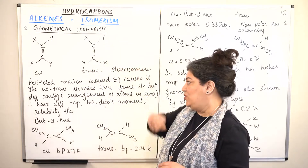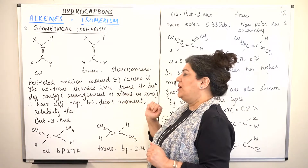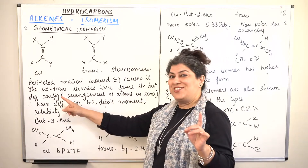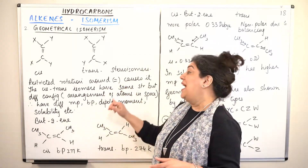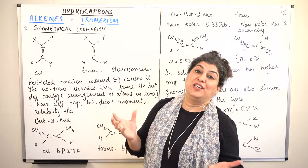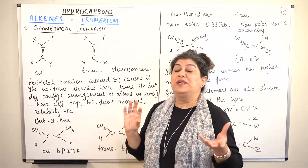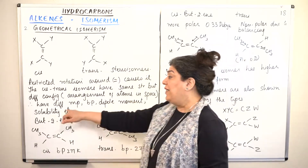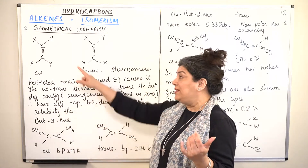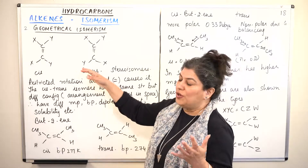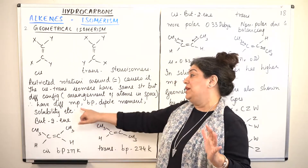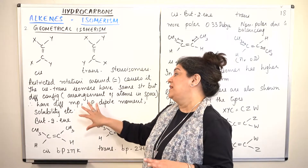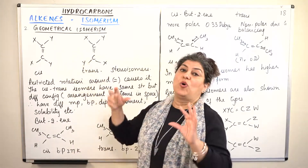If complete rotation were possible around the carbon-carbon double bond, geometrical isomerism would not exist — you could just turn one carbon to the other side. So restricted motion around the double bond is responsible for the existence of cis-trans isomers. The cis and trans isomers have the same bonding, but the configuration — the arrangement of atoms in space — is different, giving them different physical properties: different melting points, boiling points, dipole moments, and solubilities.